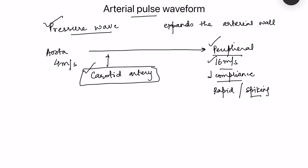In the normal pulse waveform, ventricular contraction causes pressure to rise, creating two pressure waves in the artery. As the ventricle enters the second ejection phase, pressure starts falling. At aortic valve closure, vibrations are set up and a small backflow of blood creates a little notch in the falling pressure, followed by a slight rise. This is the normal pulse waveform with its distinct components.